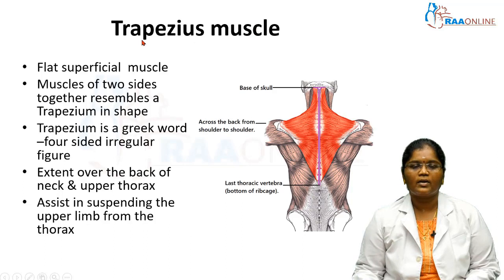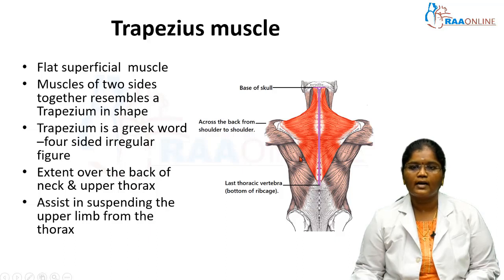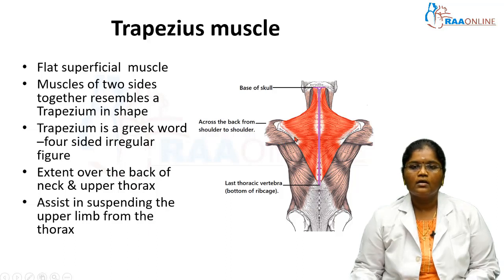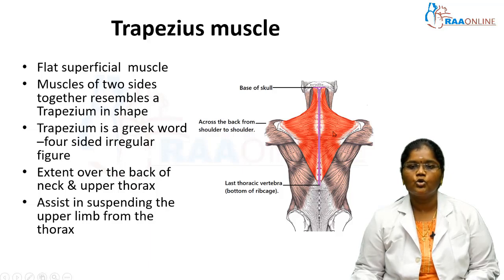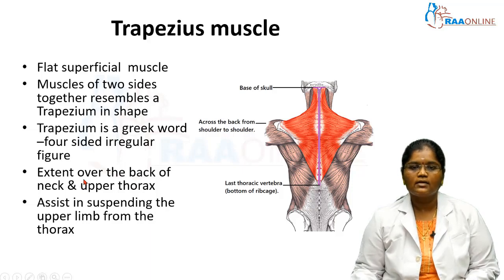The name trapezius is derived from the shape of the muscle. It is a flat, superficial muscle. The muscles of two sides together resemble the shape of a trapezium, which is a Greek word meaning a four-sided irregular figure. This muscle extends from the spinous process — the vertebral column (axial skeleton) — to the scapula (appendicular skeleton), making it an axial-appendicular group muscle. It extends over the back of the neck and occupies the upper part of the thorax, assisting in suspending the upper limb from the thorax.